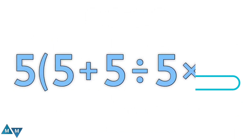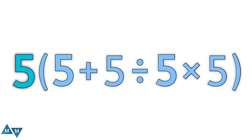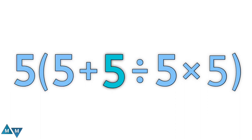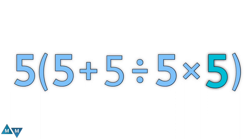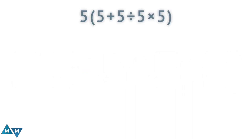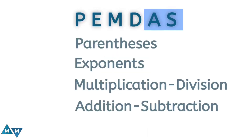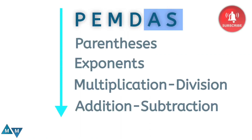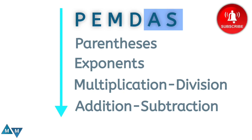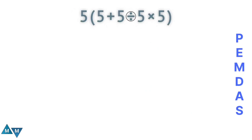The third challenge: five times parentheses, five plus five divided by five times five. Let's see step by step how to solve it. But first, try to solve it yourself and comment below your answer. Here we can use PEMDAS rule. The expression has a plus sign, division sign, multiplication signs, and parentheses.